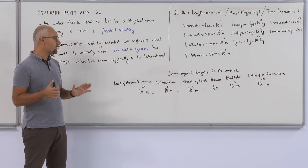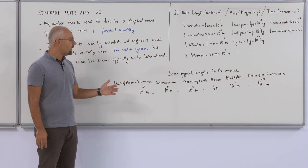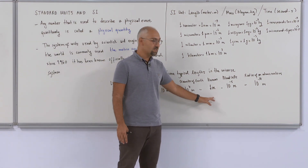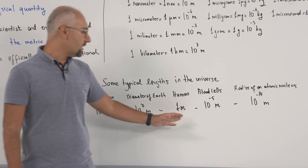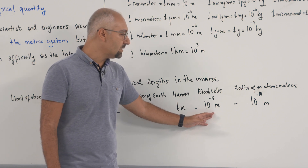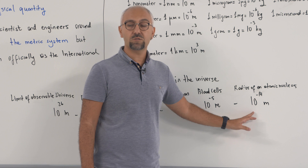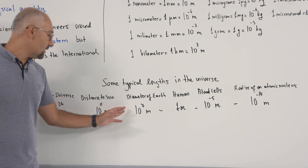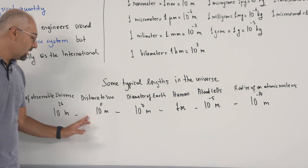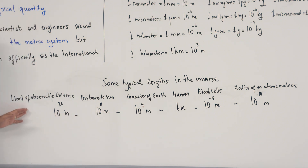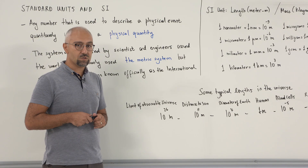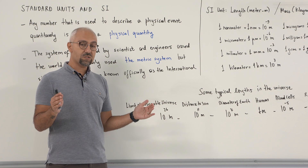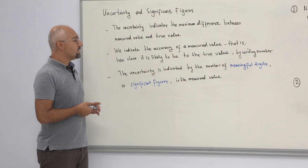Once we consider complicated physics behavior, there are certain lengths and dimensions in the universe that have to be quantified. Starting from the human scale — one of us is about one meter — going to the smaller microscale, like blood cells at ten to the minus five meters, and the radius of an atomic nucleus at around ten to the minus fourteen meters. Going larger, the diameter of Earth is ten to the seven meters, the distance to the Sun is ten to the eleven meters, and the limit of the observable universe is ten to the twenty-six meters. So we must understand our universe from micro scale to macro scale and quantify these dimensions.